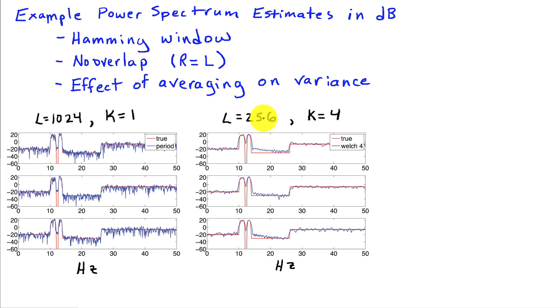Here's when we take our 1,024 points, and we divide it up into four segments of 256 samples each. And you can see that by averaging the periodograms associated with each of these length 256-point segments, we get a significant reduction in the variance. And so we've got a much higher quality estimate in terms of variance here.